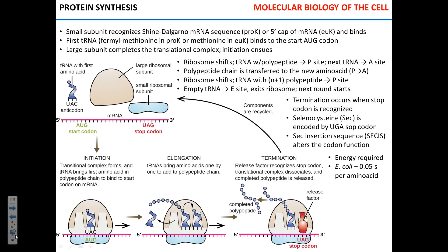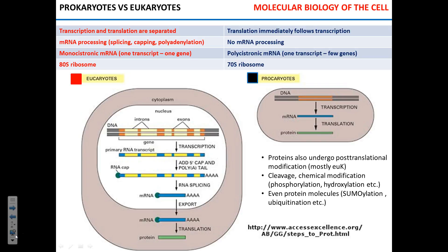We figured out, more or less last week, about the mechanism of translation, and actually we kind of walked ourselves through the entire process of gene expression. DNA is transcribed into mRNA, and mRNA is translated into proteins. We've also highlighted some differences between pro- and eukaryotic gene expression.